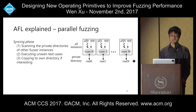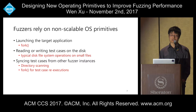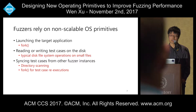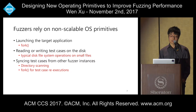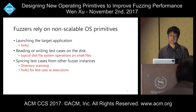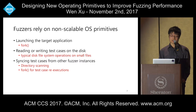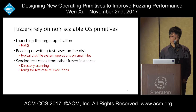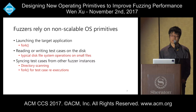Working this way, AFL and many other general fuzzers rely on OS primitives that are not scalable — that's where the bottlenecks come from. First, fuzzers always need to launch the target application via fork. Second, they need to read and write test cases on disk, involving file system operations on small files. Third, syncing test cases from other instances involves scanning working directories and invoking fork to re-execute those test cases.